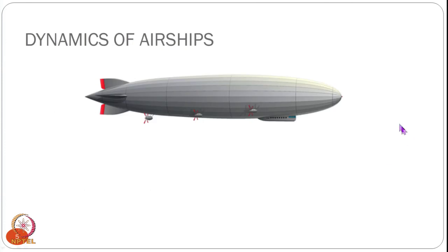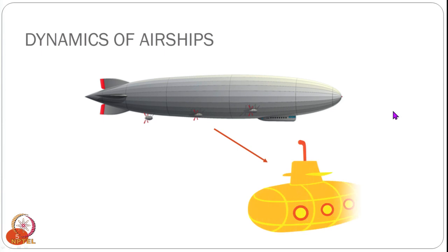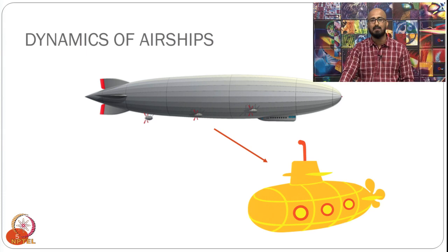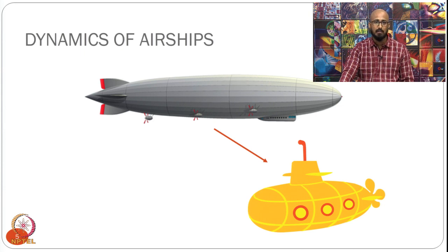Dynamics of airships have been mostly derived from submarines, primarily because both are buoyant vehicles and have many similarities. For instance, the aerodynamics of airships are very similar to the hydrodynamics of submarines. That is the reason why most things have been adapted from submarine dynamics modeling.